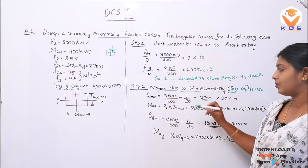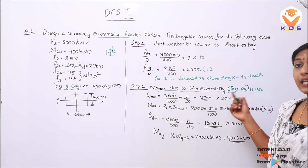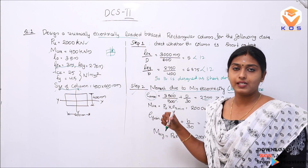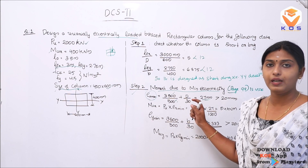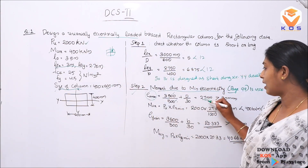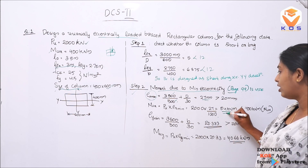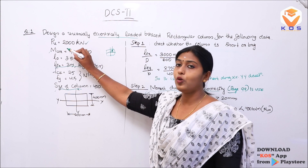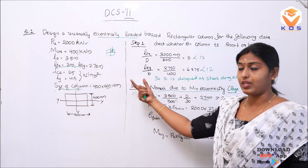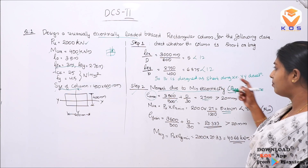From IS-456, page 45: minimum eccentricity eX = L0/500 + D/30. We check that the result is greater than 20 mm. This is the minimum eccentricity in x-direction. The moment MUX (due to min. eccentricity) = PU × eX minimum = 2000 kN × eccentricity, divided by 1000 = 54 kNm. This moment is less than the given moment of 400 kNm.